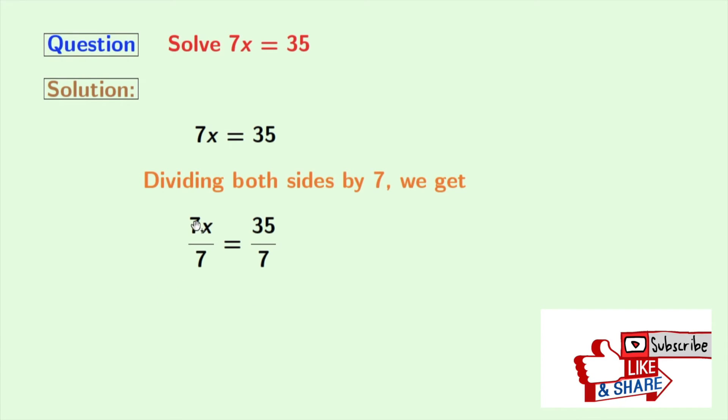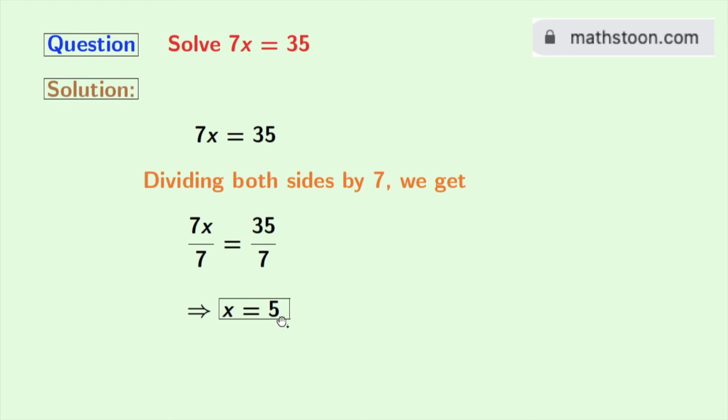Look in the left hand side, 7 gets cancelled and we are left with x. And in the right hand side, as 35 by 7 is 5, so we get 5.